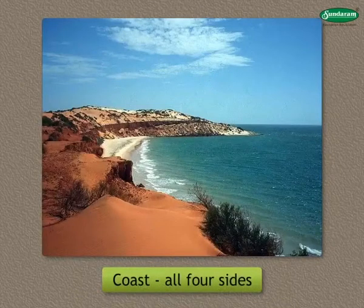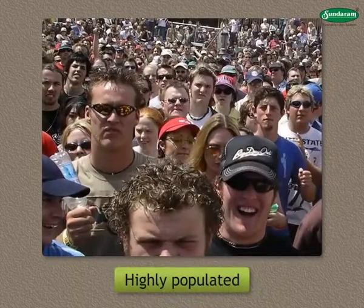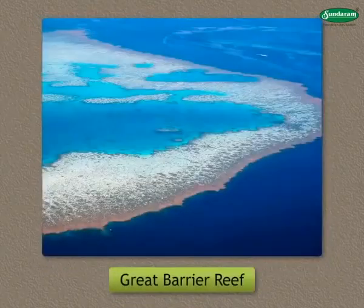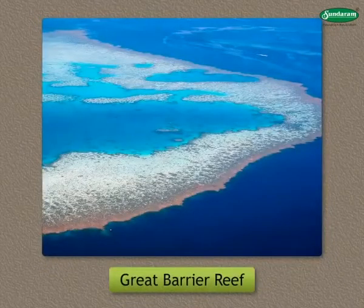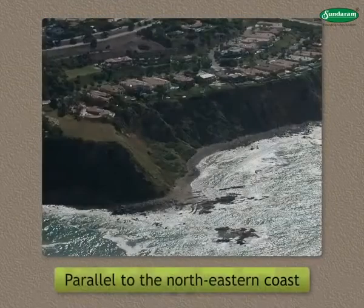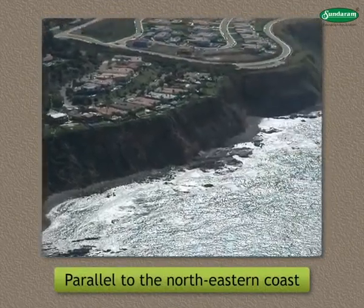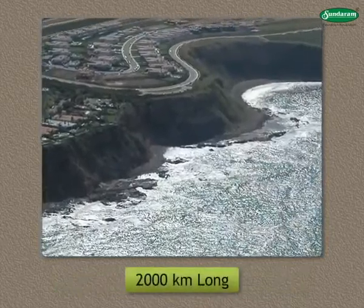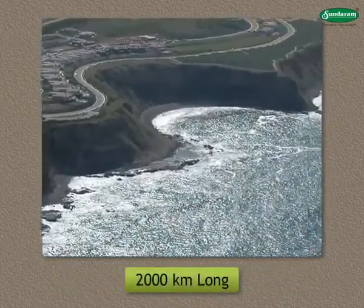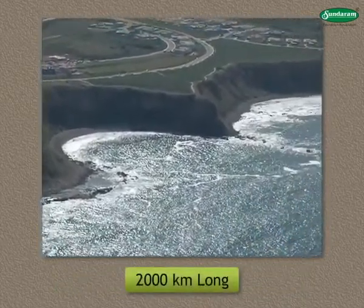This continent has a coast on all four sides. The coastal region is highly populated. The Great Barrier Reef is made up of coral rocks. It runs parallel to the north-eastern coast and is about 2,000 kilometres long.